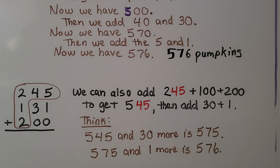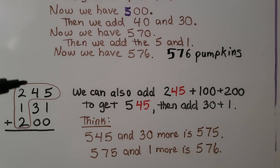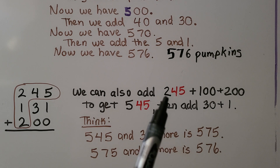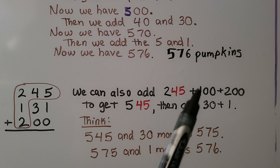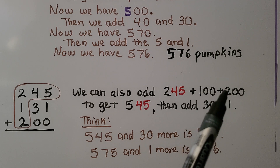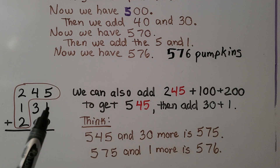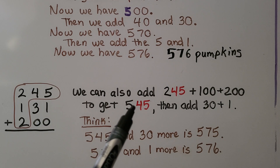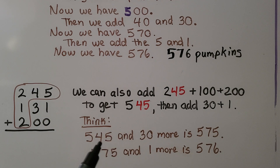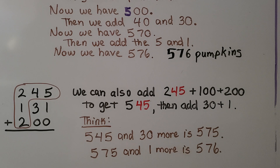We can also add these three-digit addends sequentially: 245 plus 100 plus 200. We have 245, then 345, then 445, then 545. Then we add 31: starting at 545, we add 30 to get 575, then add 1 to get 576.